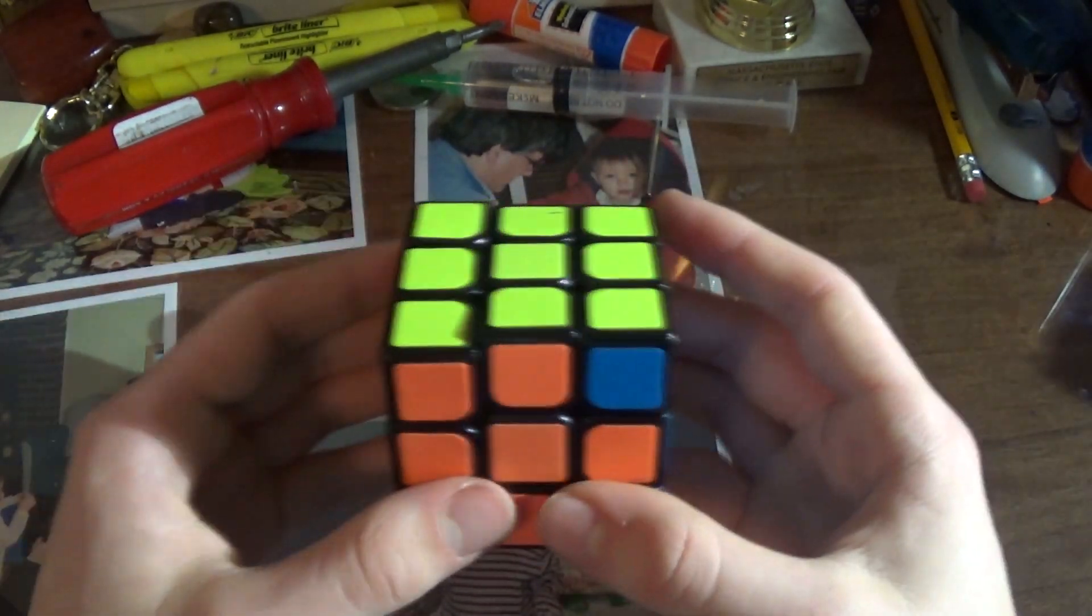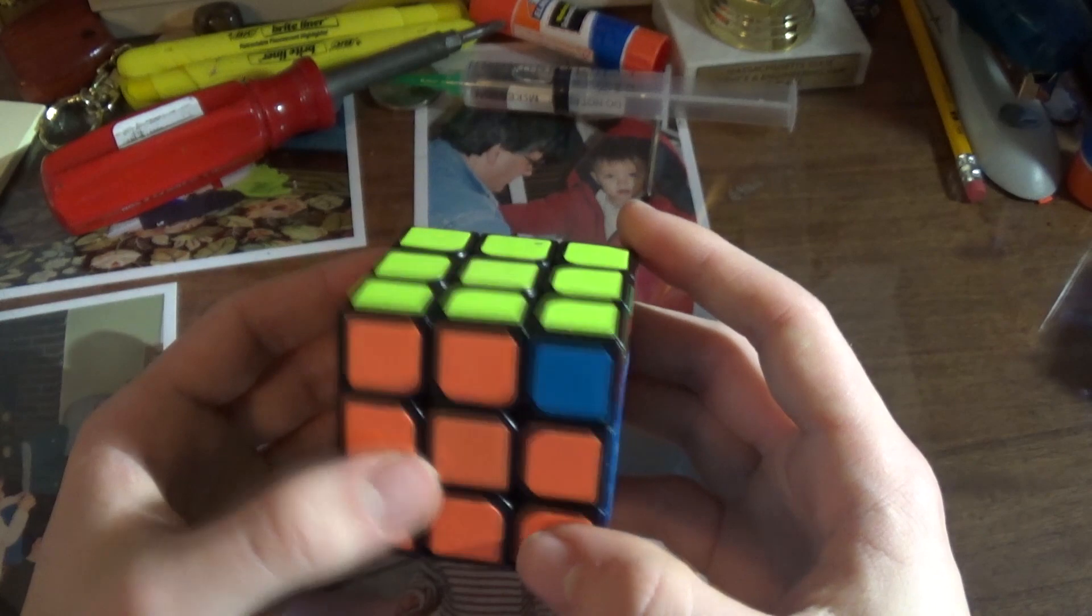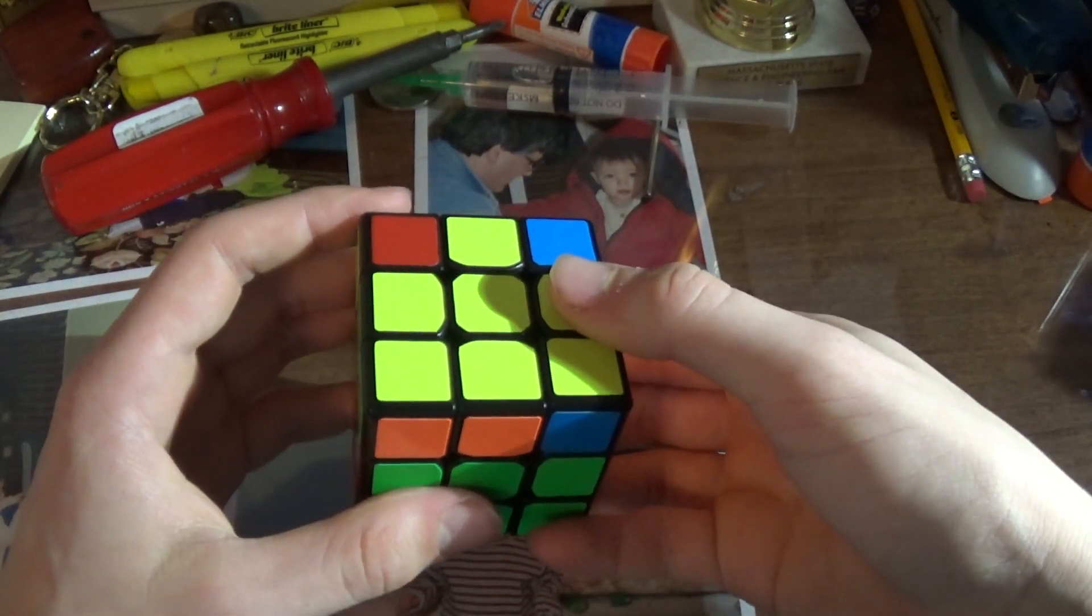Here's actually a pretty simple ALG, and if you know this G-perm, you pretty much got the whole ALG down. So it goes like this. I'll do it fast first.